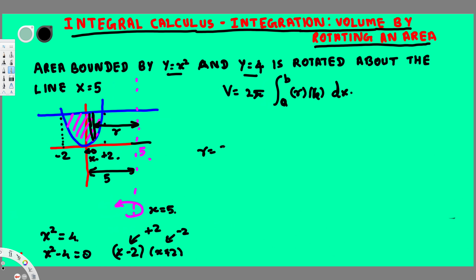To find the height, we take the top function minus the bottom function. The top is y equals 4 and the bottom is y equals x², so the height is 4 minus x². Now we have all the information needed to set up the integral.